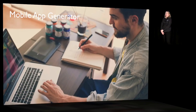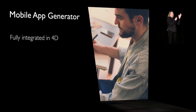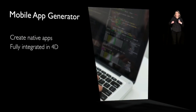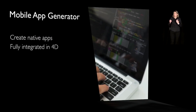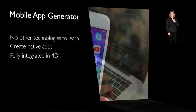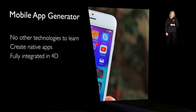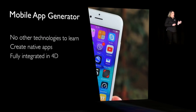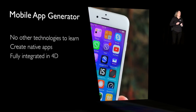So now it's time to tell you more about the 4D for iOS product and what it's built on. 4D for iOS is a mobile app generator, fully integrated in 4D. It allows you to easily create native mobile apps in pure Swift, as if an iOS developer would have coded it for you, but without you needing to learn any other technology or language. The advantage of a native app versus a web app is that the UI and UX design is fully optimized for mobile devices.